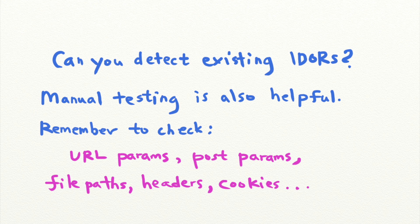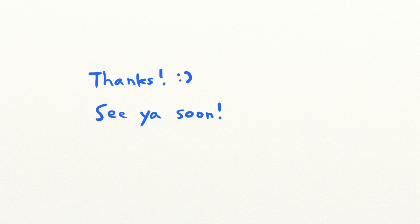So you can check for IDORs by capturing and inspecting each request that should be restricted, altering these fields that refer to resources, and trying to hack one of your accounts from the other. And that's it for today's security lesson. Thanks for watching.